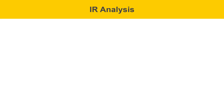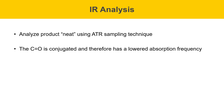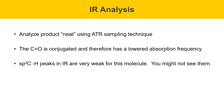In this experiment, we'll be doing IR analysis of the product using the ATR sampling technique to get an IR spectrum of just the pure liquid — the analysis will be done neat. The C=O carbonyl group is conjugated in this molecule and therefore has a lowered absorption frequency. Usually unconjugated ketones show up at about 1710 cm⁻¹; however, in this molecule you'll look for it at a lower frequency because of the conjugation. The sp2-hybridized C-H peaks in the IR spectrum are very weak and tend to be difficult to see — you might not see them.